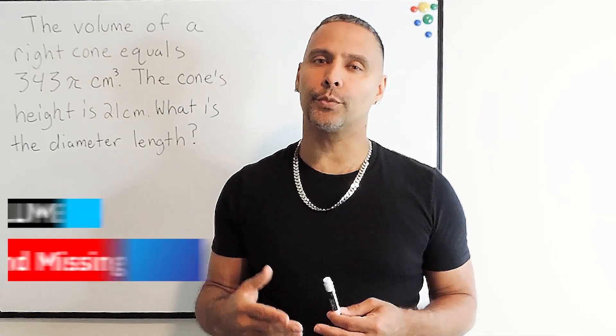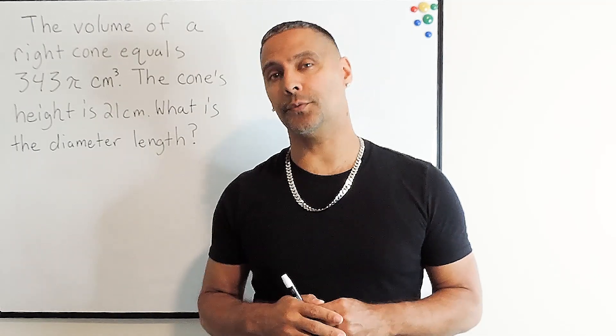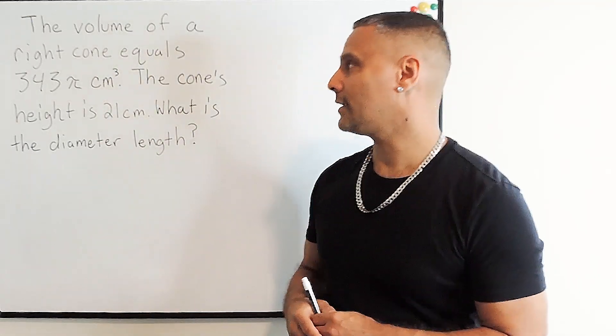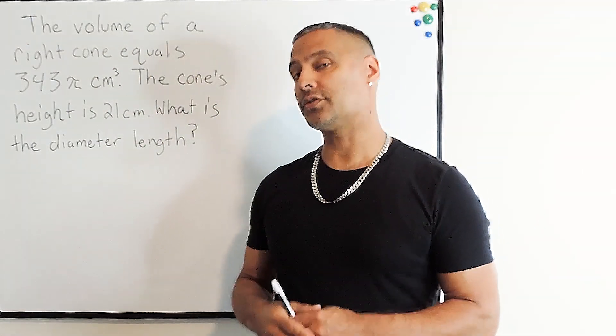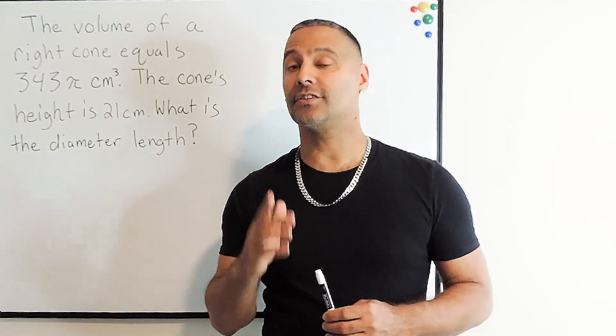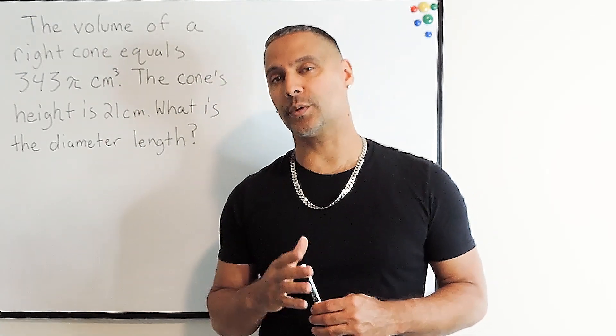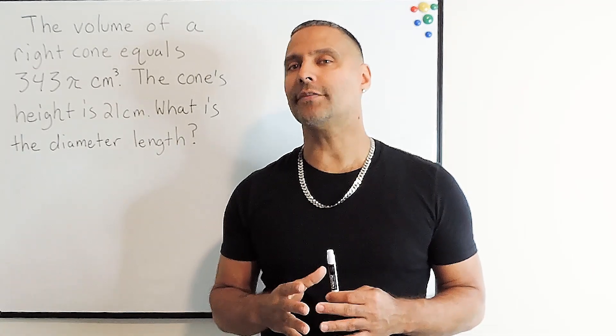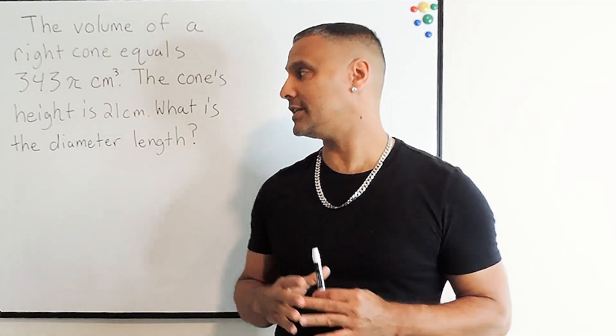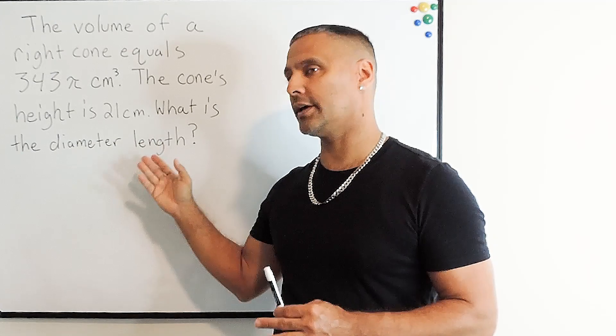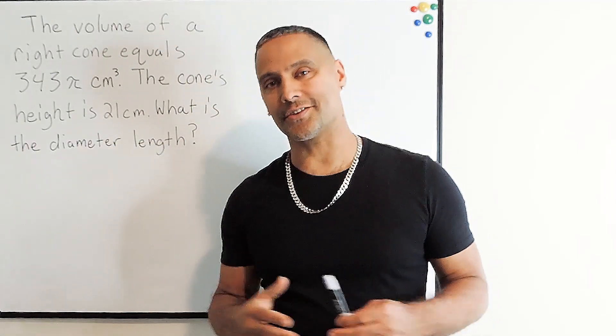Let's read the problem so we can determine what we are looking for. The volume of a right cone equals 343π cubic centimeters. The cone's height is 21 centimeters. What is the diameter length of that cone's base, which is a circle?